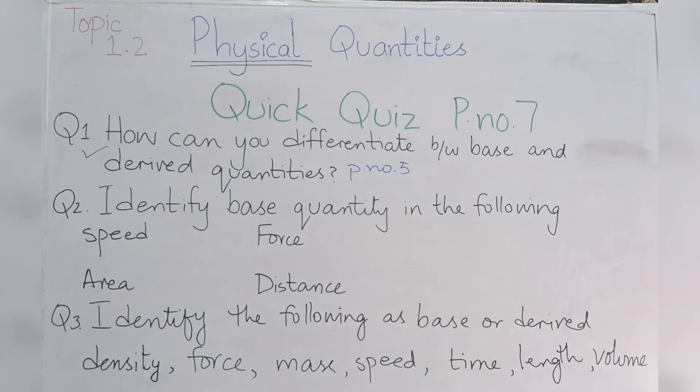Question number 2 is identify base quantity in the following. If you remember, speed is distance divided by time. You can see that speed is between two base quantities, so this is derived quantity. We have identified the base quantity, so this is crossed out.